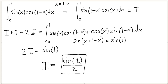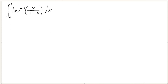Look how quick that was — so much faster than integration by parts. This integral is very difficult for those new to King's Rule. There is a very important identity you must remember: inverse tangent of x plus inverse tangent of (1 over x).